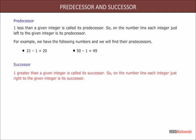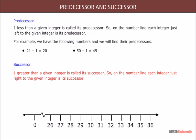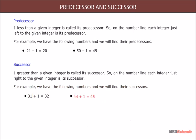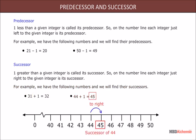One greater than a given integer is called its successor. On the number line, each integer just to the right of the given integer is its successor. For example: 44 plus 1 is equal to 45, so 45 is the successor of 44.